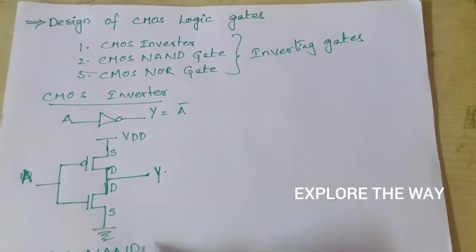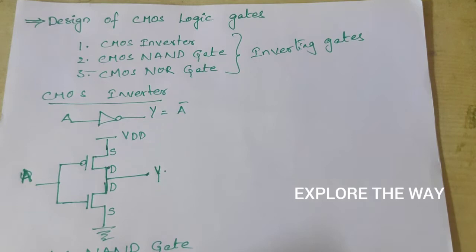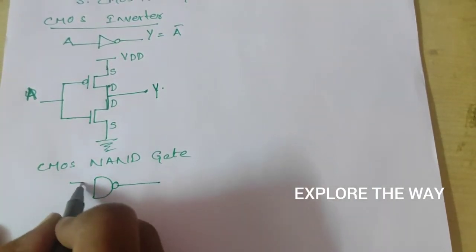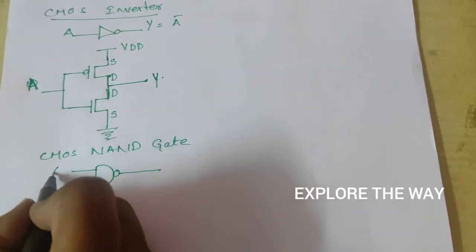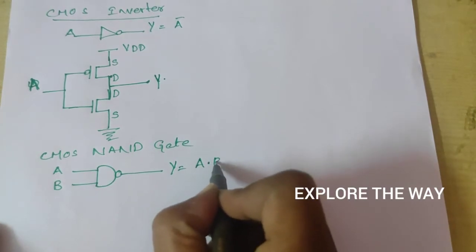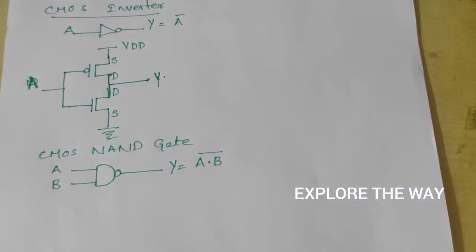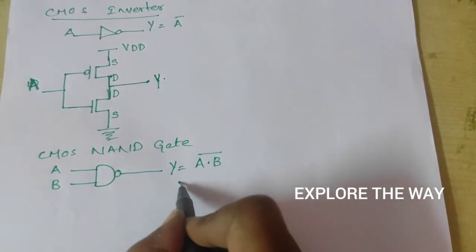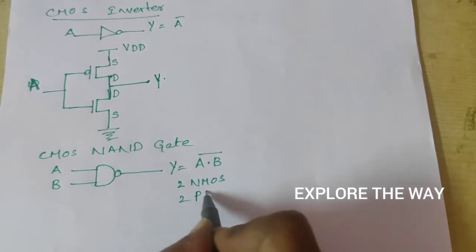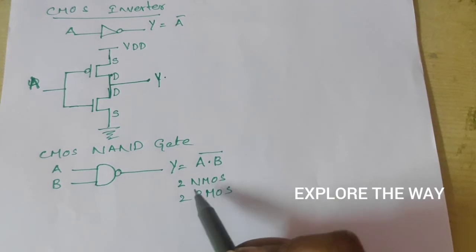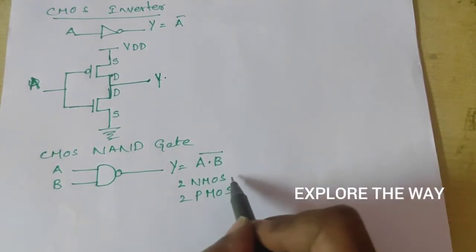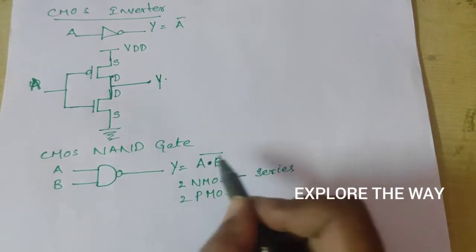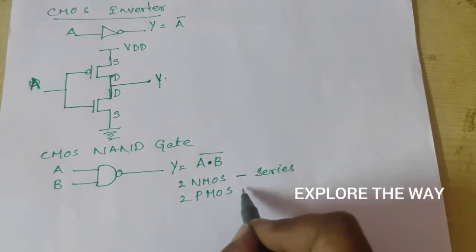Next one is the CMOS NAND gate. The inputs are A, B and the output is Y, which is equal to A dot B whole bar — that is the logic function. To implement this, we have two input variables, so we need two NMOS transistors and two PMOS transistors. NMOS transistors implement the pull-down network and PMOS transistors implement the pull-up network. The two NMOS transistors must be connected in series when we have a dot between the two variables, and the PMOS transistors must be connected in parallel.